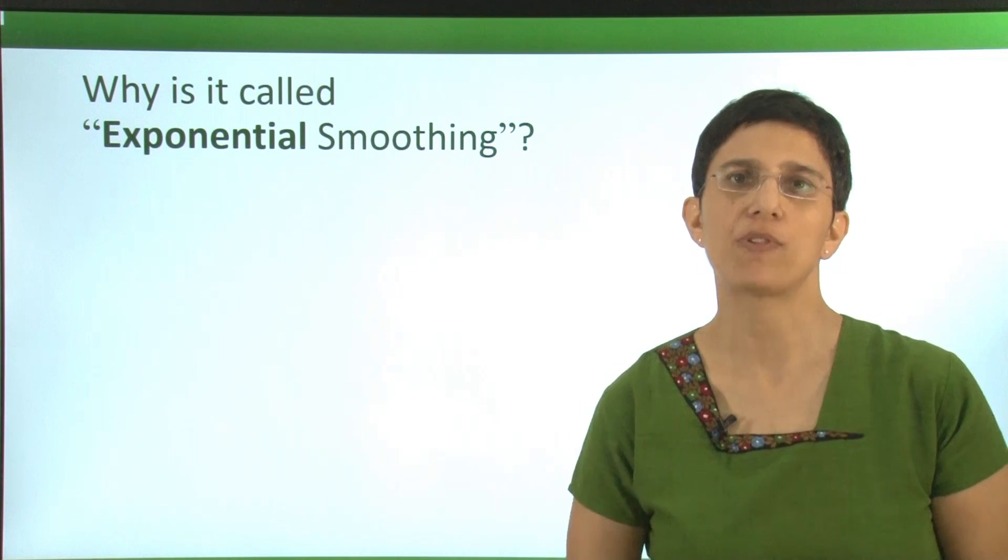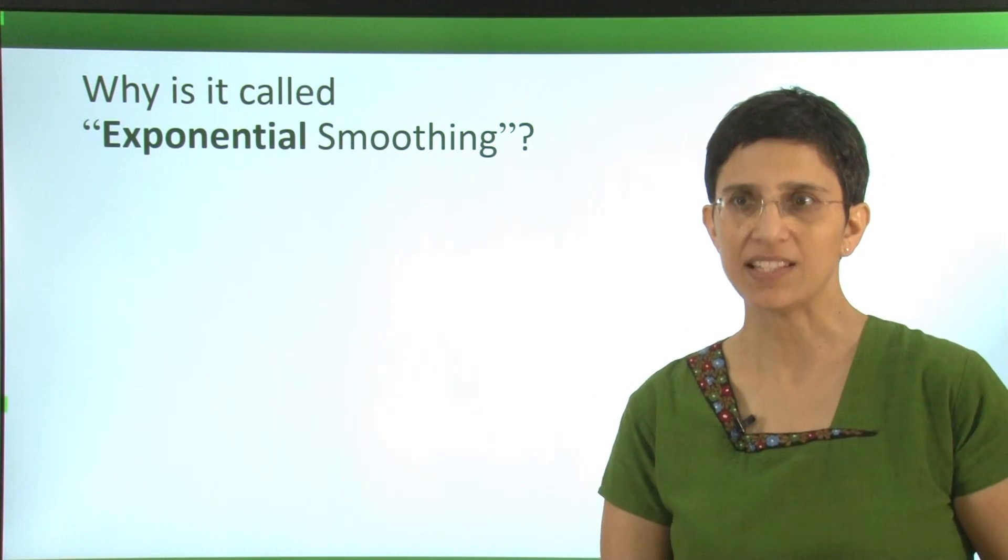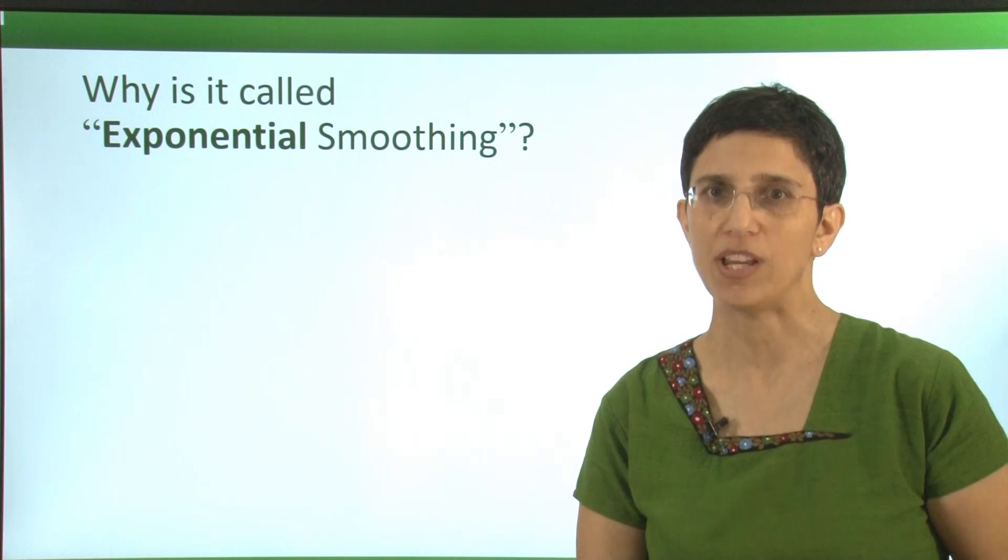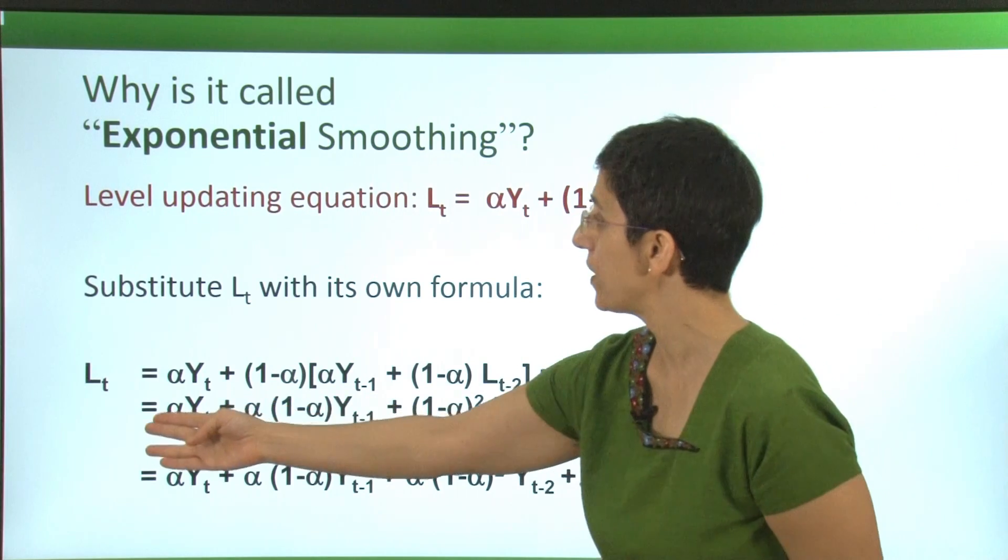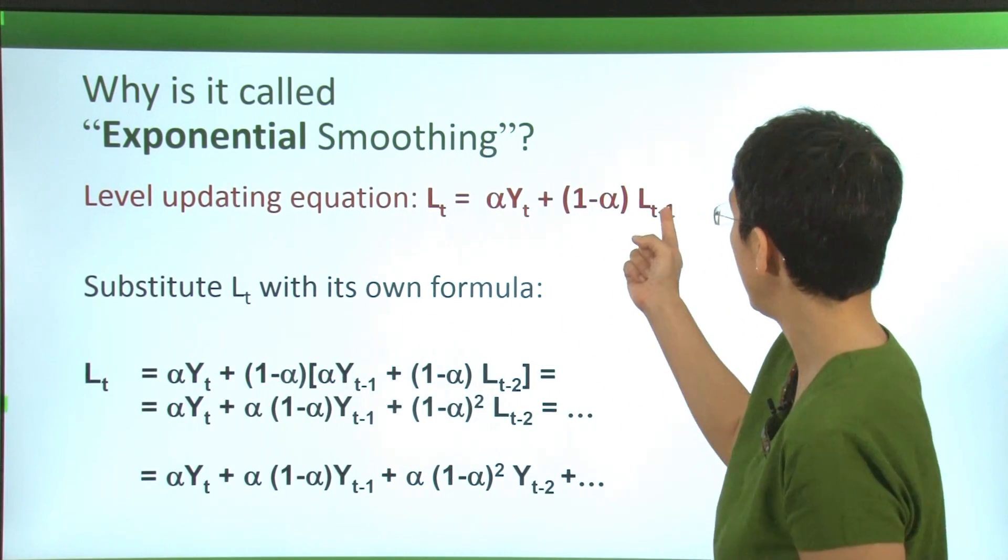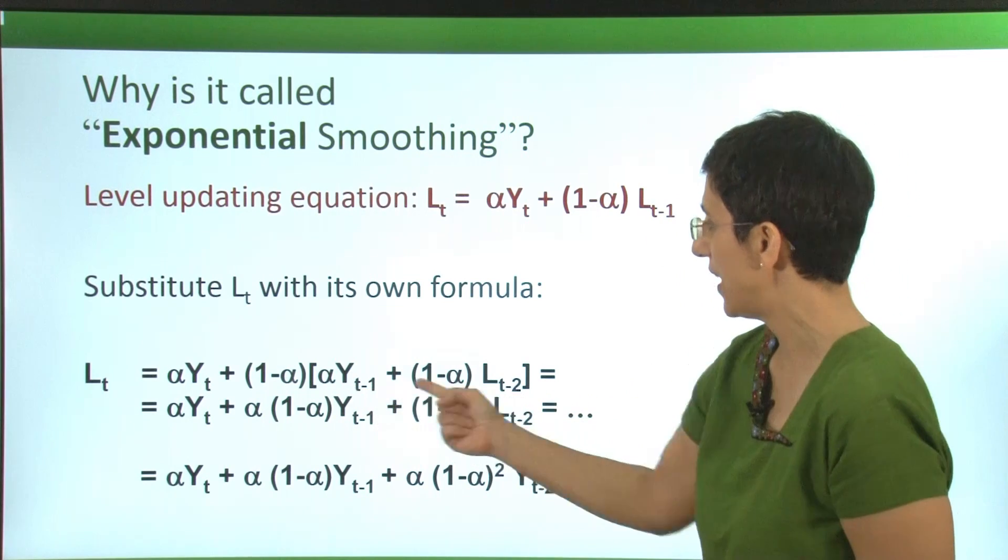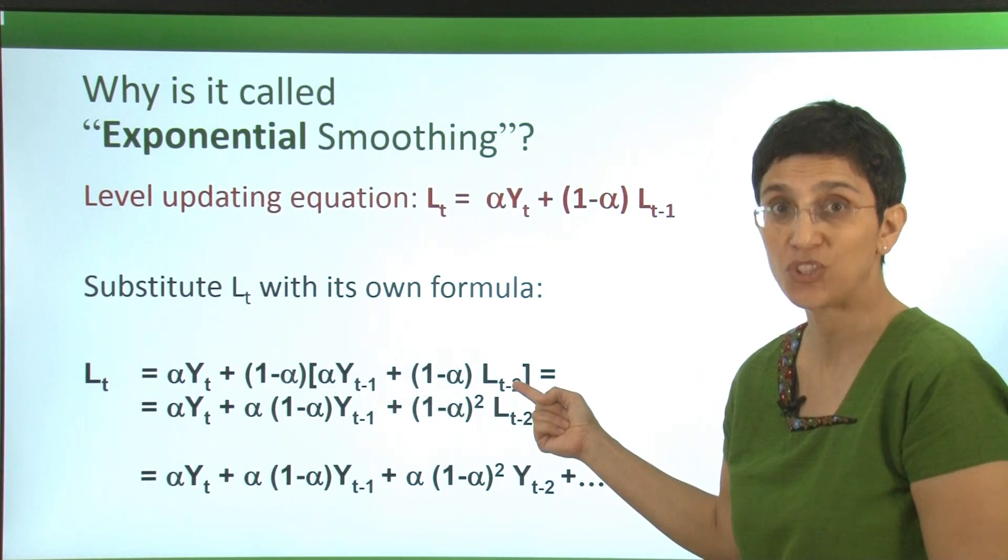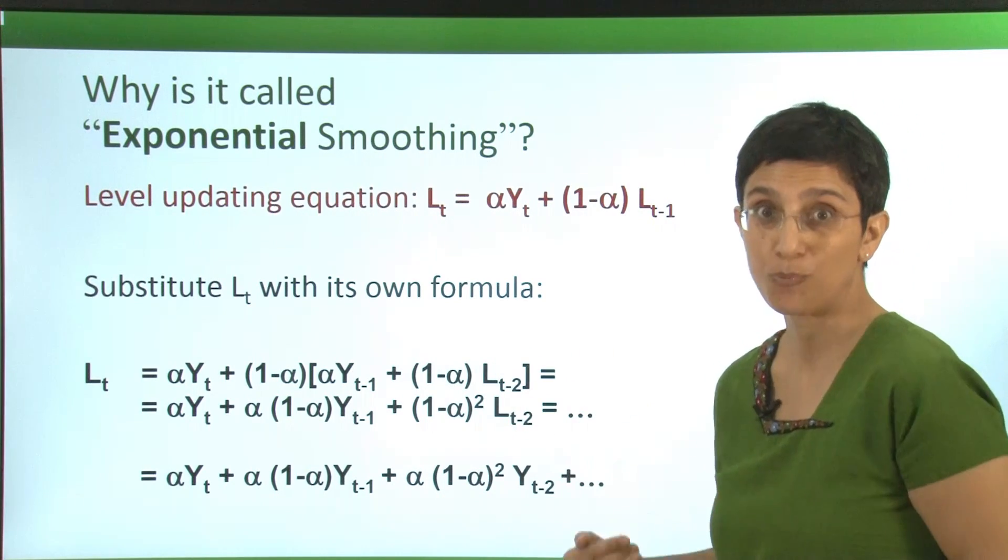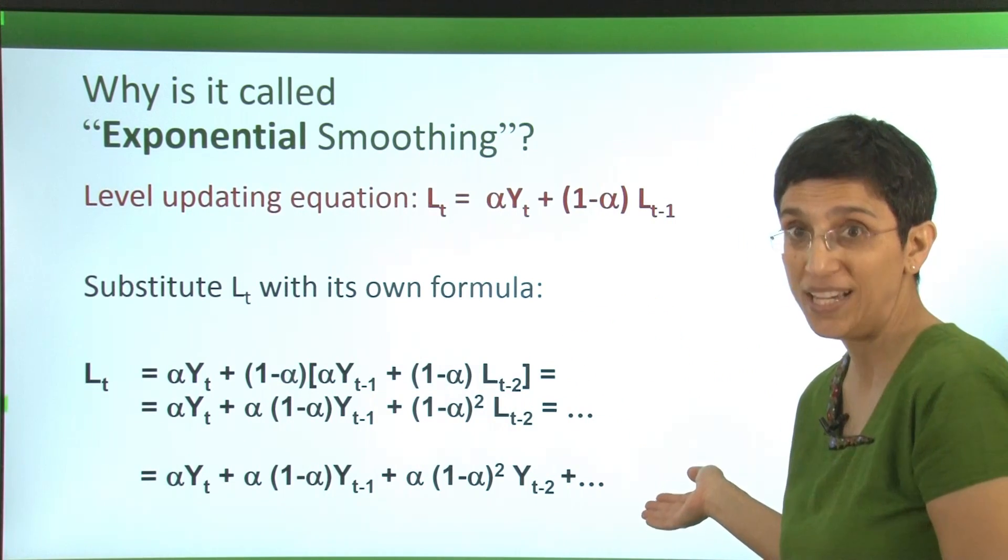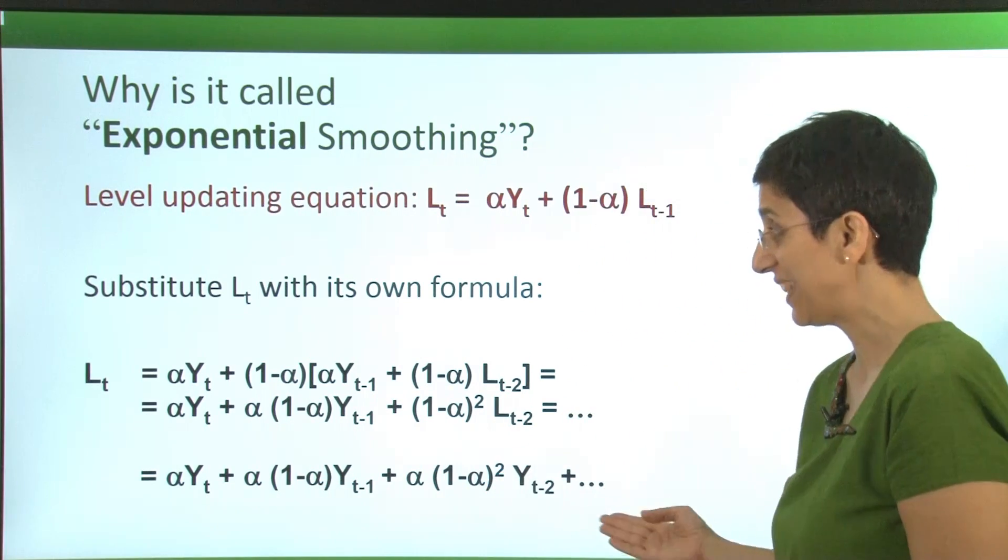So why is this algorithm called exponential smoothing? To see this, let's rewrite the updating equation a little bit differently. We have the level updating equation as we wrote it before. But now let's substitute L sub t minus 1 with its own formula. So we start with the normal formula and then substitute L sub t minus 1 with its own formula that is based on L sub t minus 2. We can then do the same thing again and substitute L sub t minus 2 with its predecessors. And if you write this out all the way down, you'll end up with something that looks like this.